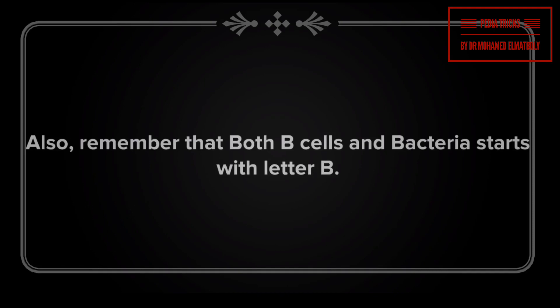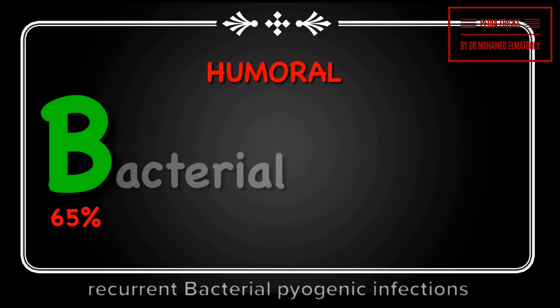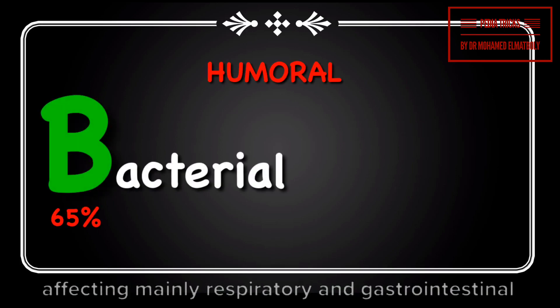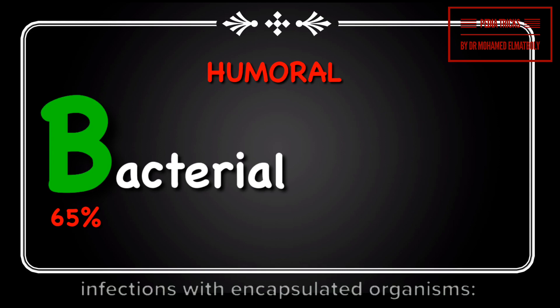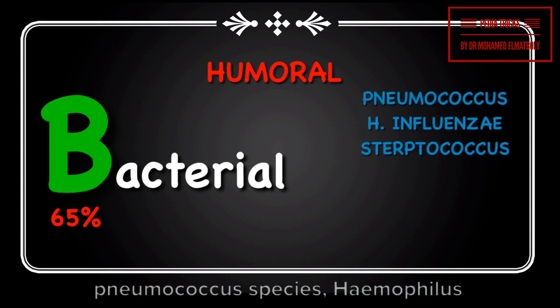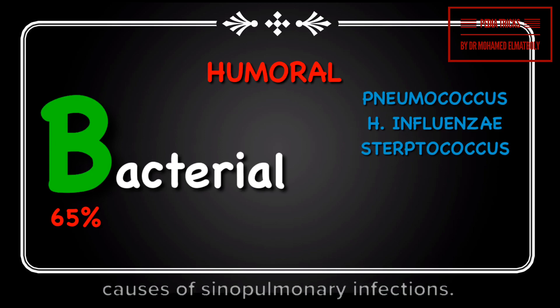Also remember that both B cells and bacteria start with the letter B. So in case of a B cell defect, expect recurrent bacterial pyogenic infections affecting mainly the respiratory and gastrointestinal systems. Infections with encapsulated organisms — pneumococcus species, Haemophilus influenzae, and Streptococcus species — represent the main causes of sinopulmonary infections.